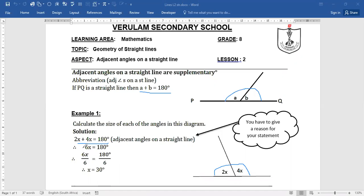And checking your answer, 6 times 30 will give you 180 degrees. So that's your answer for adjacent angles on a straight line.